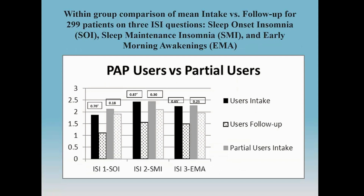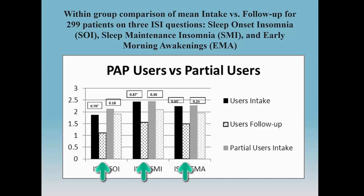The last slide breaks out the first three questions of the insomnia severity index, which specifically refer to SOI (sleep onset insomnia), SMI (sleep maintenance insomnia), and EMA (early morning awakenings). In each group, the black bar represents user intake and the next bar with polka dots represents follow-up. You can see the largest improvement across each of these dimensions — SOI, SMI, and EMA — for the PAP users. The partial users show some improvements, but not as much.